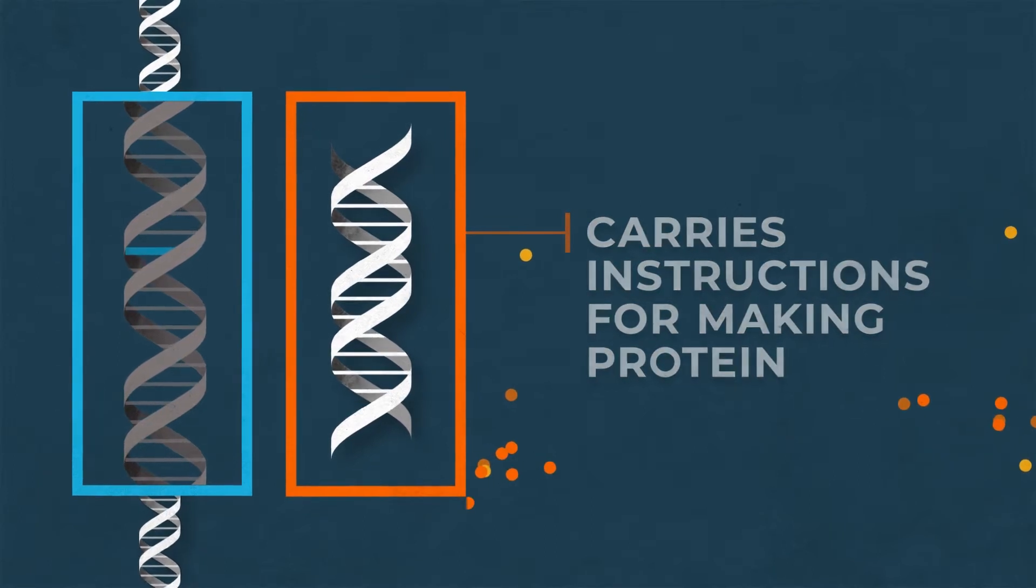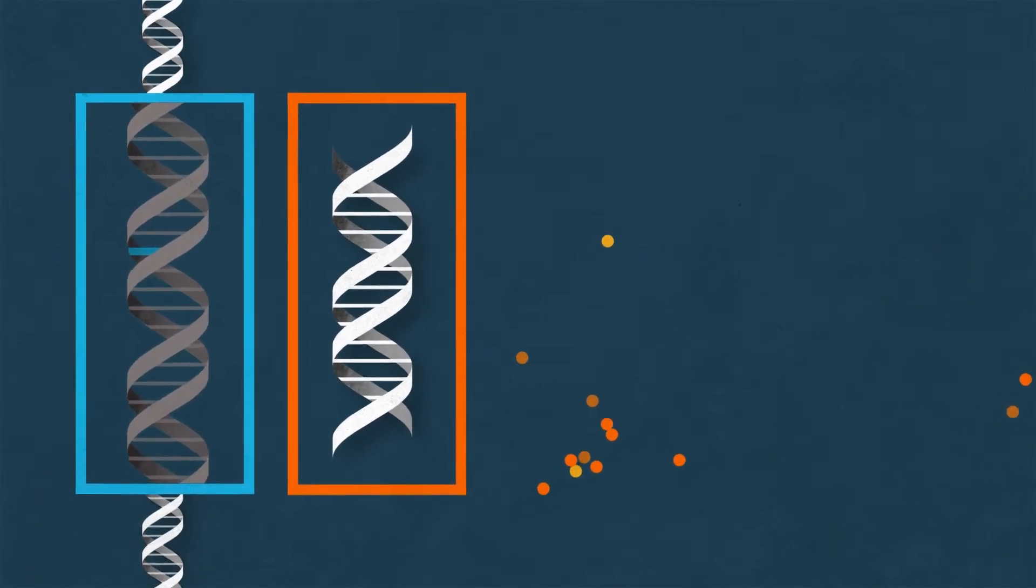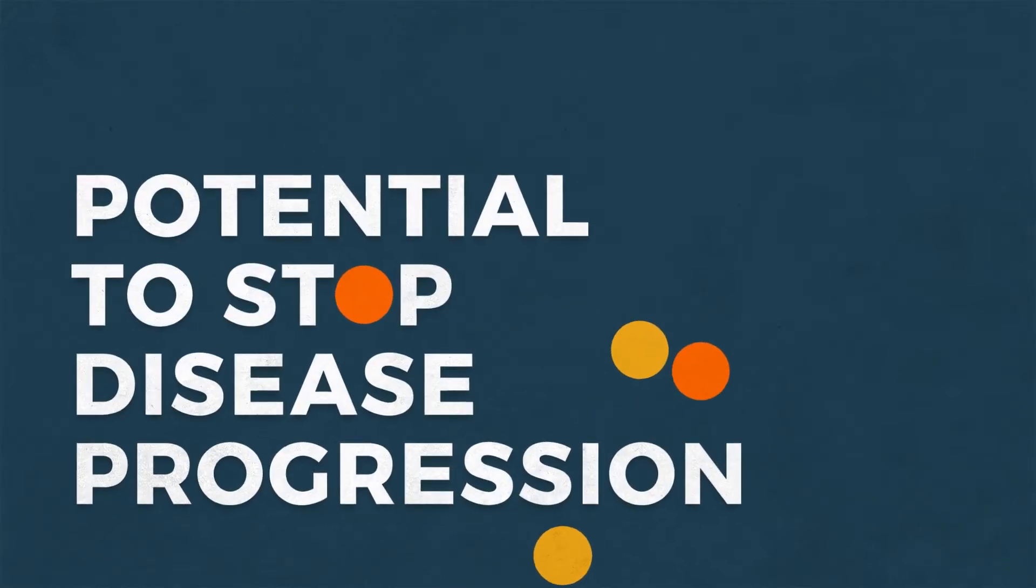For example, the new gene may make a protein that is needed for cells to function properly. Protein is being made in those cells. There is the potential to stop disease progression.